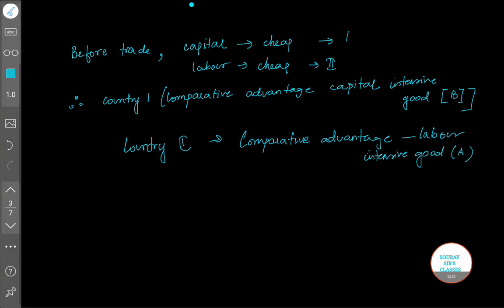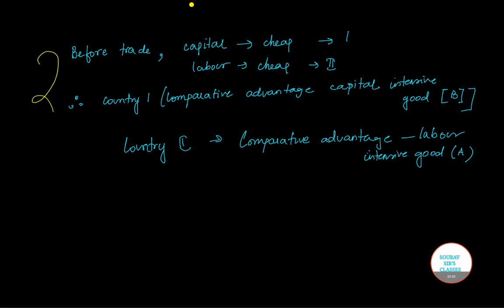This is the structure that is there before trade. Trade is not possible. Now let us look at the situation when we remove the barrier and the two countries participate in trade. Country 1 will export good B while country 2 will export good A.